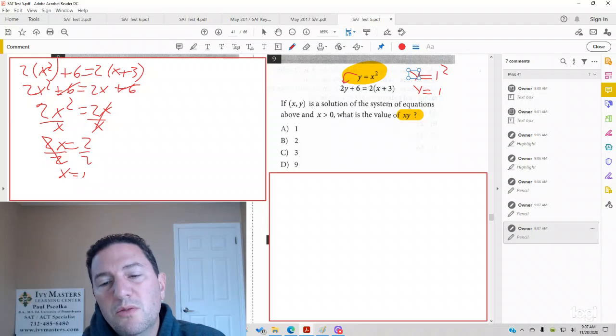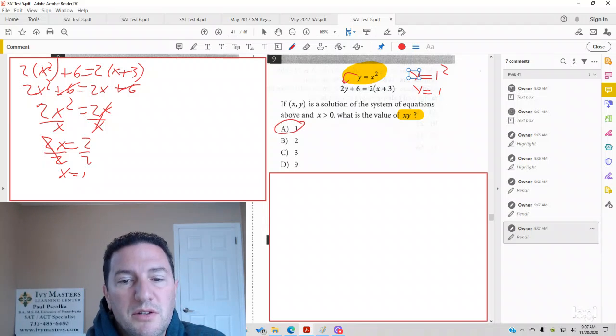So, if x equals 1, y equals 1, what's x times y? 1 times 1, it's 1. So, your answer is A.